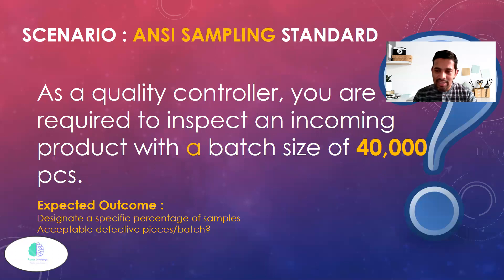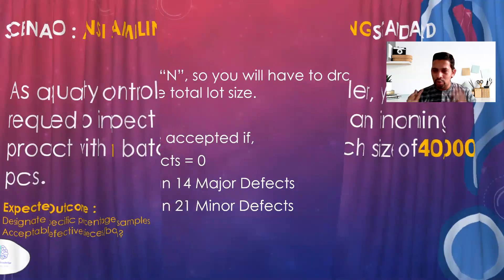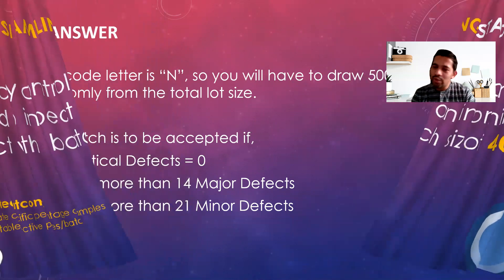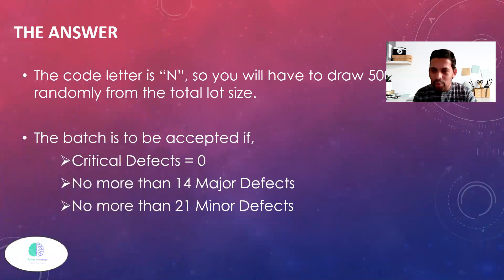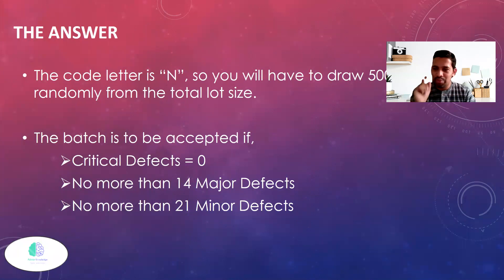So if you would have guessed, let me show you the output. The answer is you need to take 500 samples. The batch is to be accepted under the following conditions: zero critical defects. If there is any critical defect, you have to do 100% inspection.